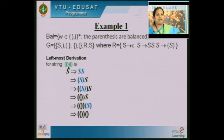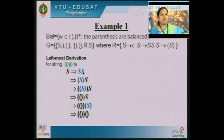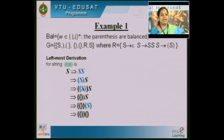Consider the string: opening, opening, closing, closing, opening, closing parenthesis. The leftmost derivation for this string applies rules 1, 2, and 3. S derives SS by rule 2. The first leftmost non-terminal S is replaced by rule 3 as opening parenthesis S closing parenthesis. Again the leftmost S is replaced as opening parenthesis S closing parenthesis, and then S is replaced as epsilon. The remaining S is replaced as opening parenthesis S closing parenthesis, and S tends to epsilon. So by one leftmost derivation we have derived this string.